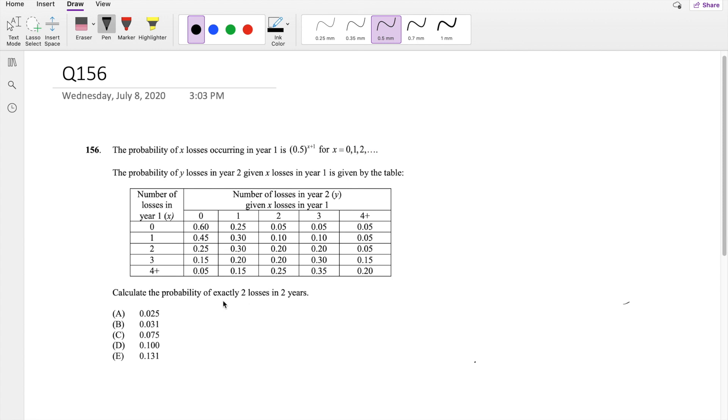The question asks, how can you get the probability of exactly two losses in two years? I'm going to denote X as year 1 and Y as year 2.